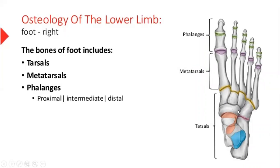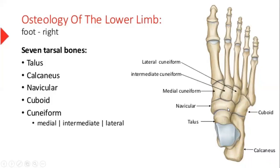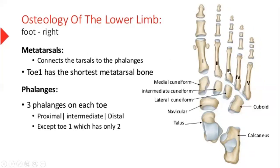We have the talus, metatarsals, and phalanges. Just as the hand has carpals with different names, the tarsal bones have different names: the heel bone is calcaneus, then talus, navicular, cuboid, and the lateral, intermediate, and medial cuneiform bones. These are the metatarsals. The first toe metatarsal is the smallest. Then we have phalanges — toe 1 has only 2 phalanges, while the rest of the toes have 3 phalanges each: proximal, intermediate, and distal.